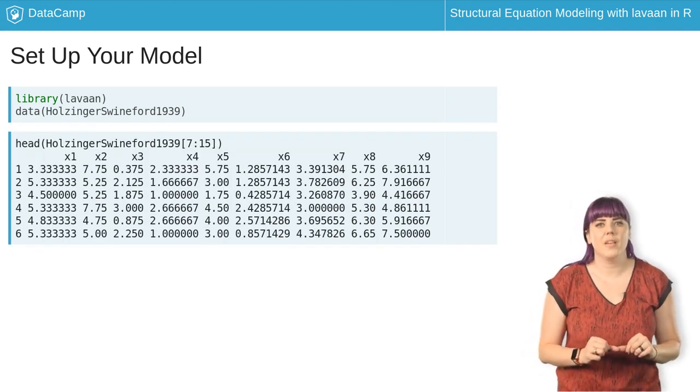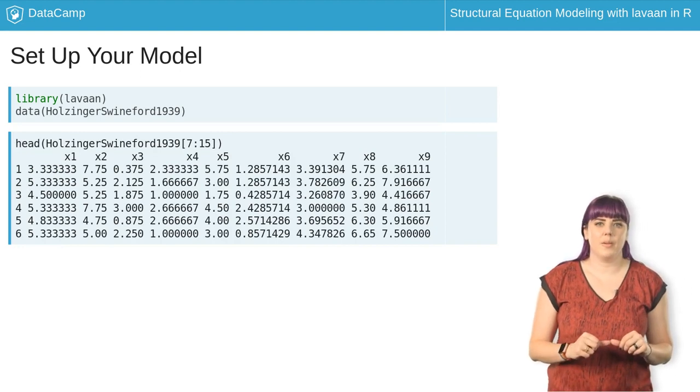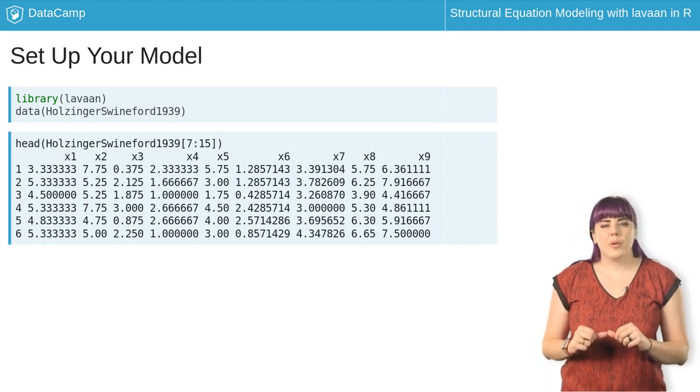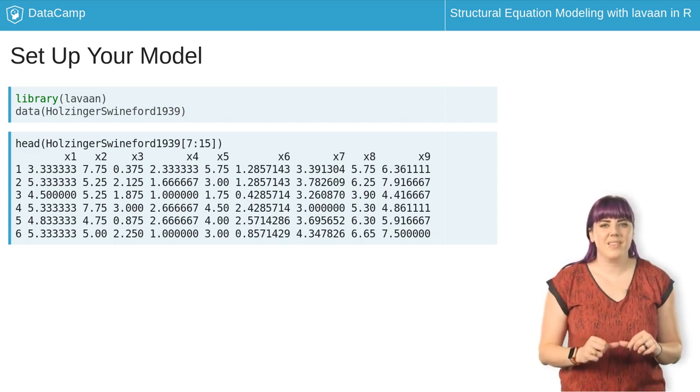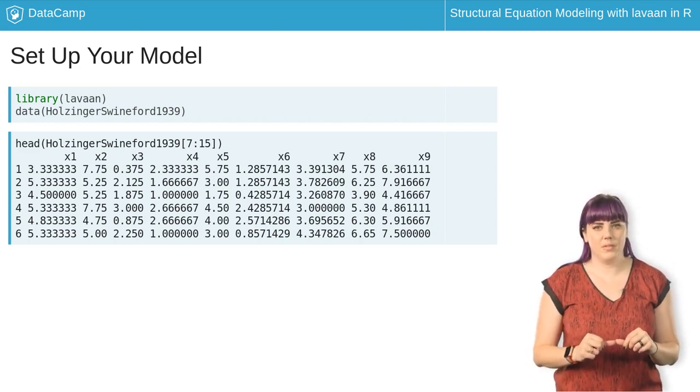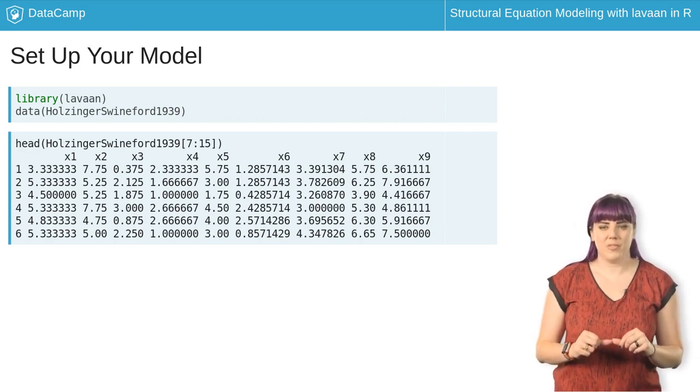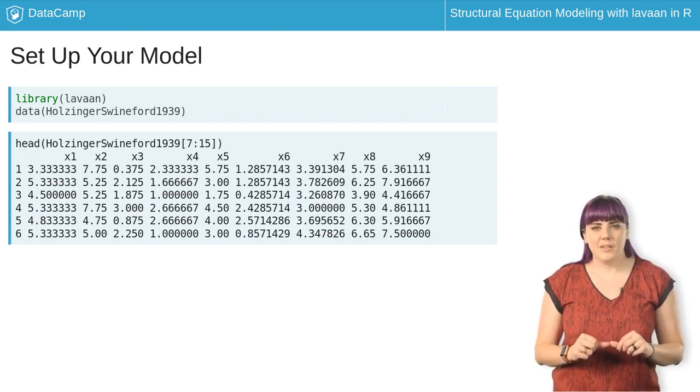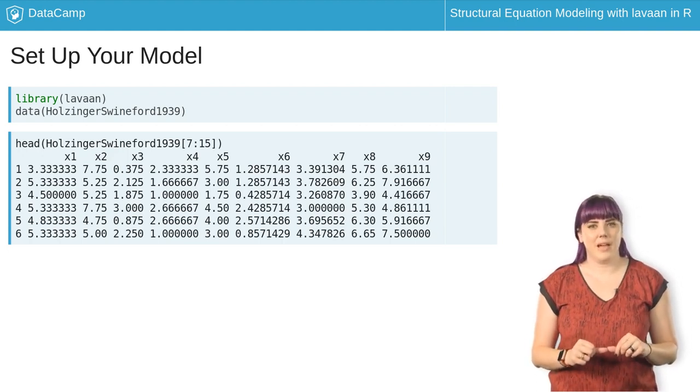One-factor models have one latent variable with at least three manifest variables. We will create a model measuring a visual speed factor using six of the nine manifest variables. X1, 2, and 3 are measurements of visual perception, while X7, 8, and 9 are speed counting and addition tasks.